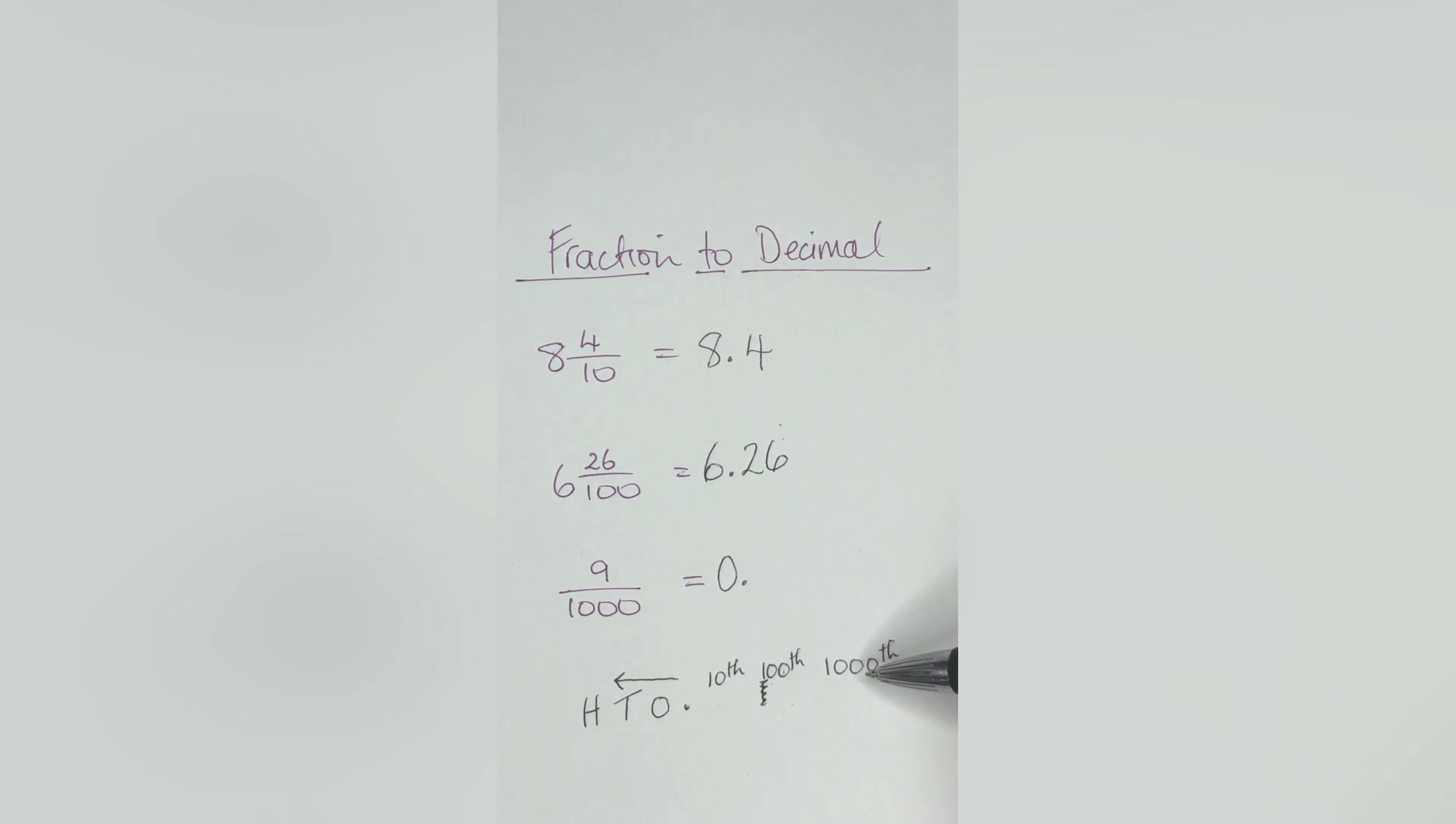Your thousandth place is third away from the decimal point. There's no value in the tenth place, no value in the hundredth place, and then your nine goes there. So nine thousandths is 0.009.